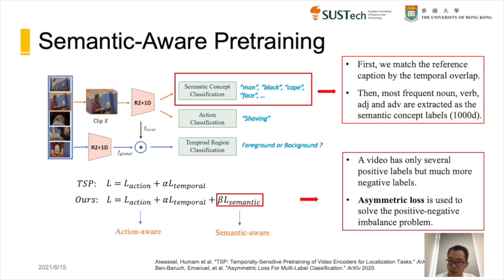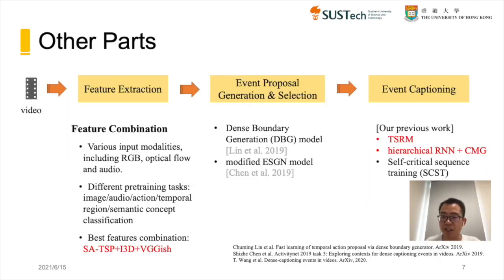The semantic concept prediction is treated as a multi-label classification task. One problem is that a video has only several positive labels but many more negative labels, contributing to a class imbalance problem. To solve this, we employ the asymmetric loss, which can dynamically suppress easy negative samples and focus on hard negatives. For other parts, to utilize various input modalities such as RGB, optical flow, and audio, we use different pre-training tasks including classification for image, audio, action, temporal region, and semantic concepts.